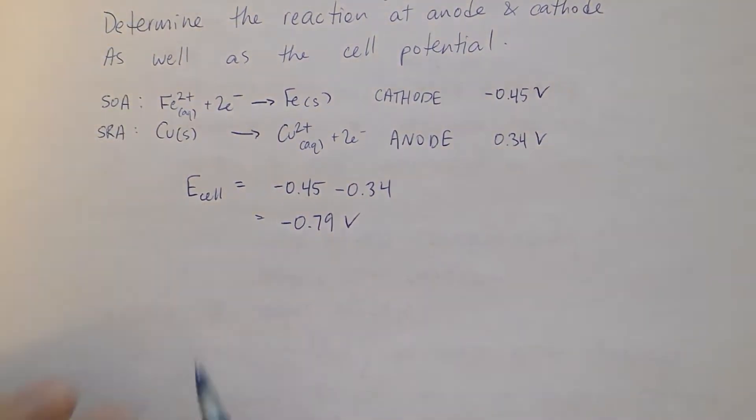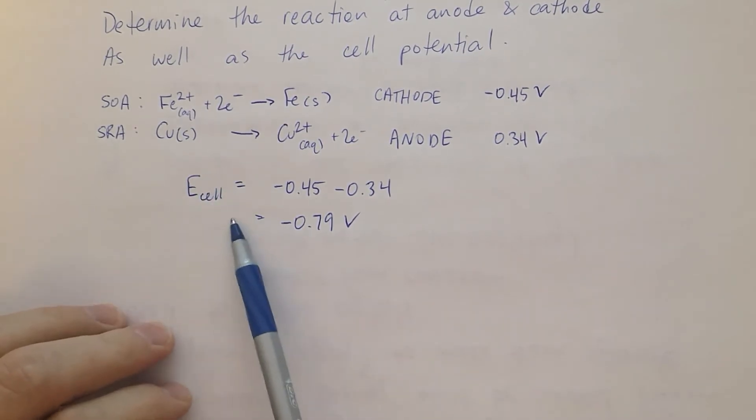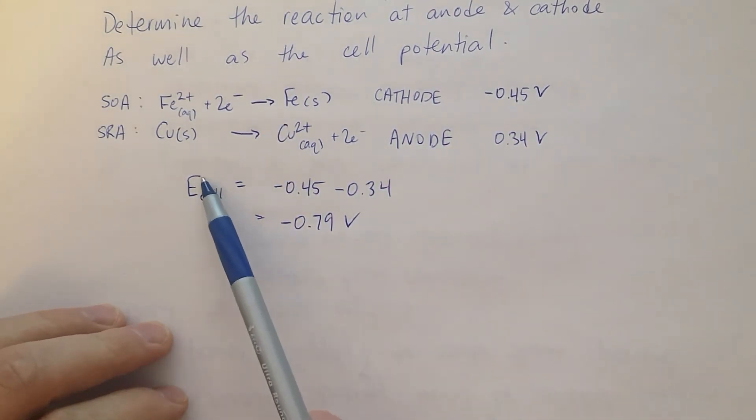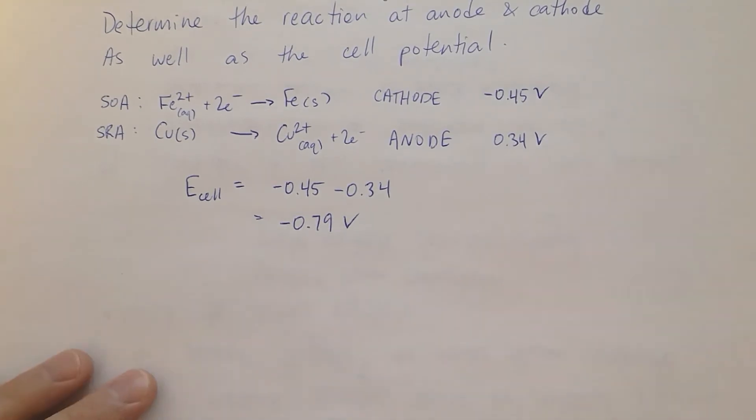A couple things to talk about here. I purposely didn't put a little circle up here because it's not a standard cell potential. If these were standard half cells, you would never get a negative. If you see a little circle here, it's not a big deal. I wouldn't mark anything wrong if I saw that. But again, these aren't standard half cells, because if they were, you would never get a negative cell potential.